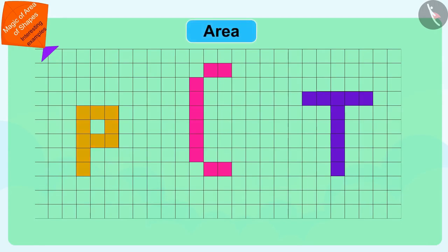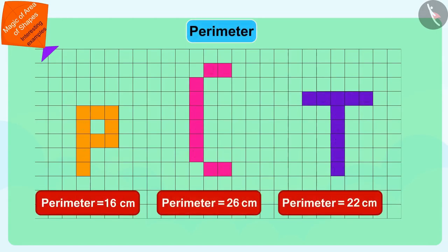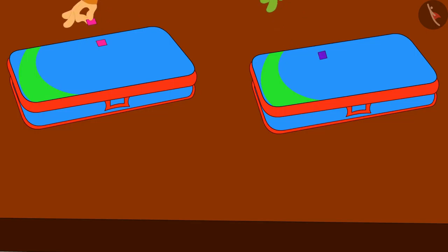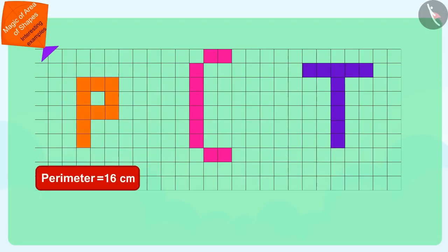Children, you have seen how the areas of the letters of Pinky, Chanda and Tufan are the same, however their perimeters are different. It is quite possible that the shapes having the same area may vary in perimeter. Chanda and Tufan made letters indicating their names on their compass boxes by using those stickers so that they would never fight again about their compass boxes.